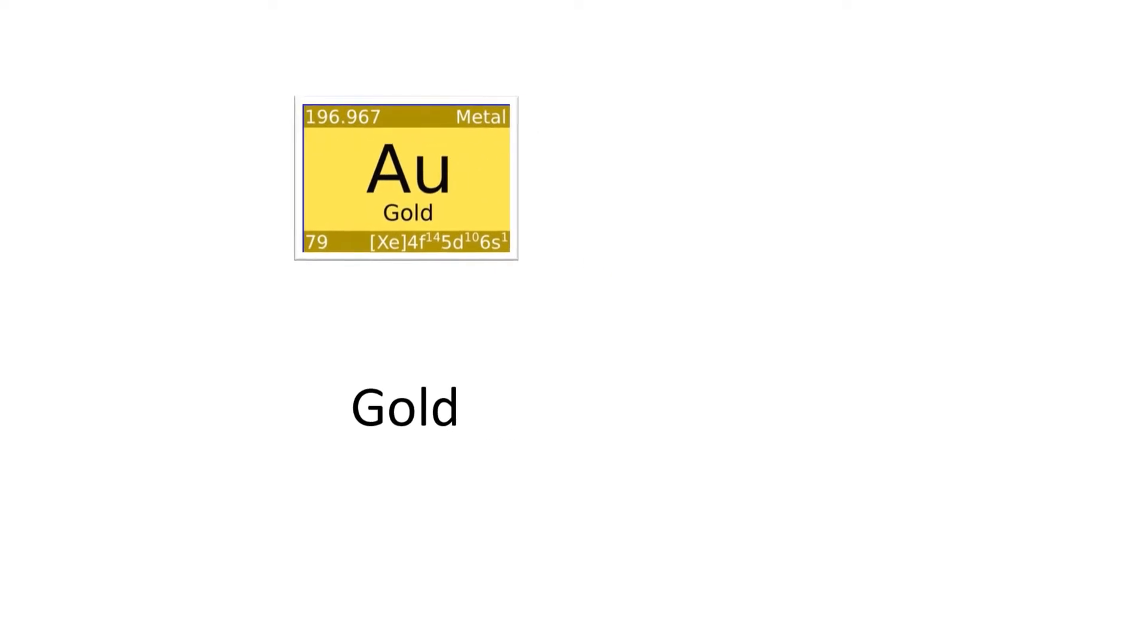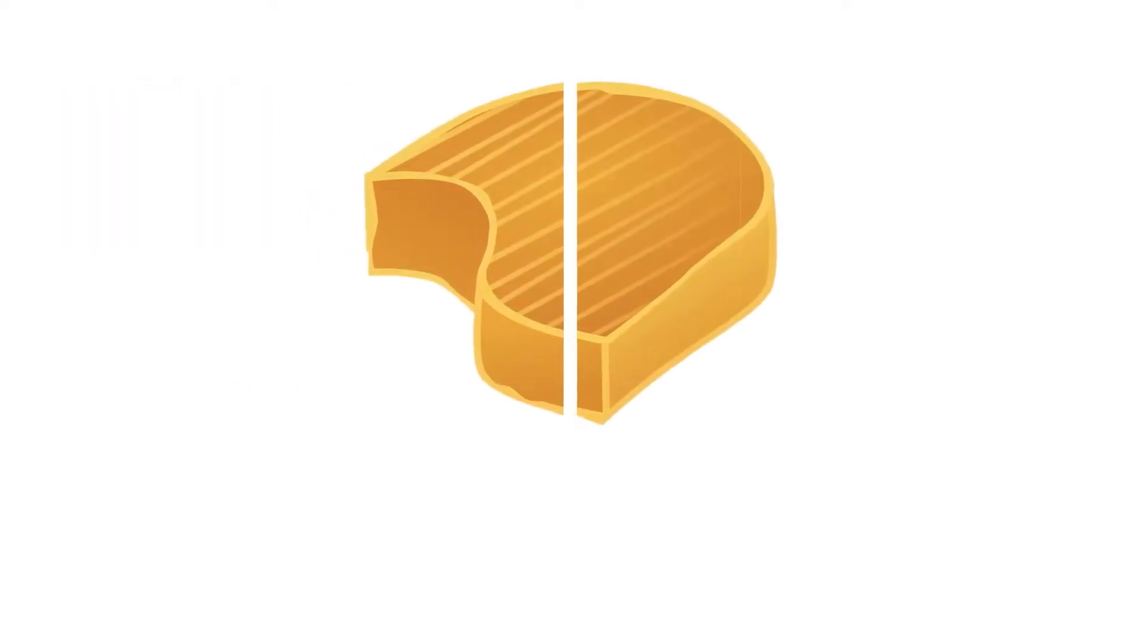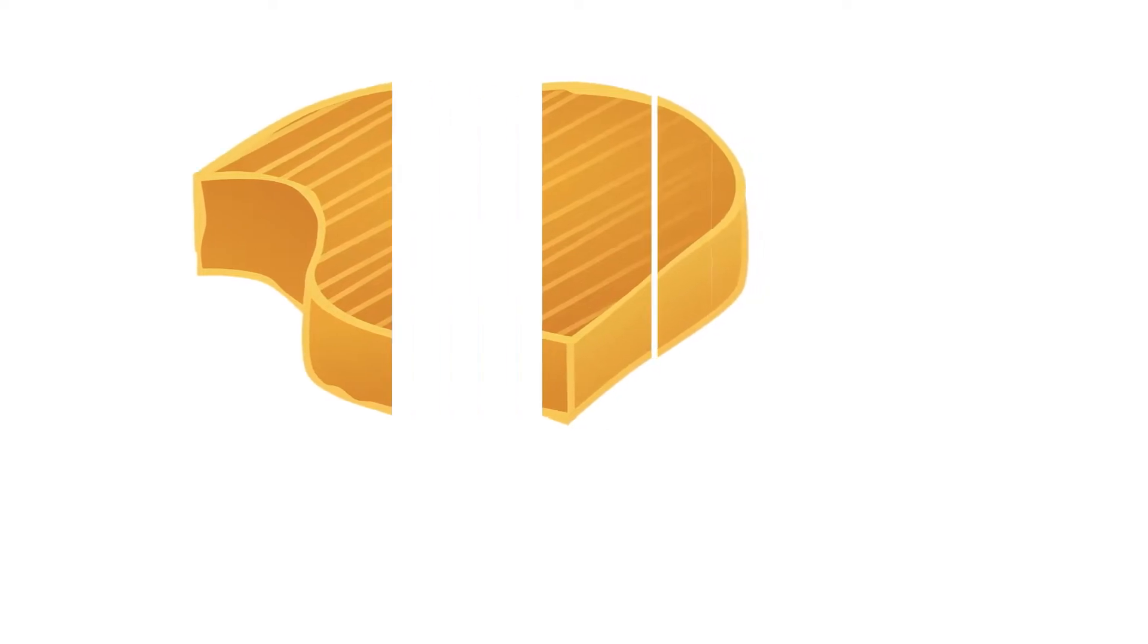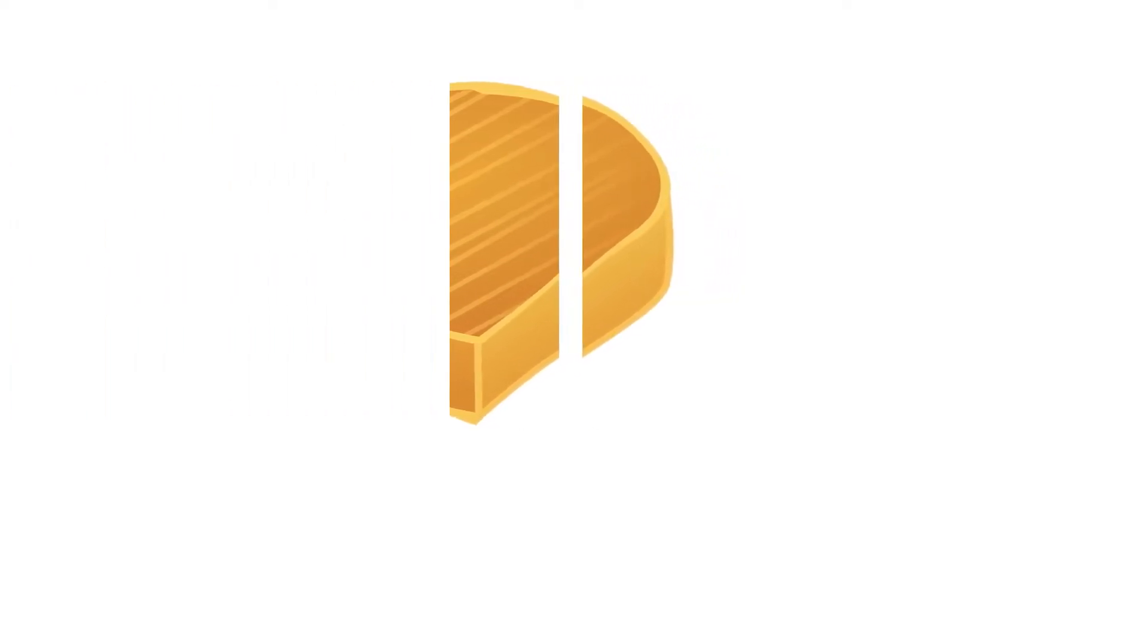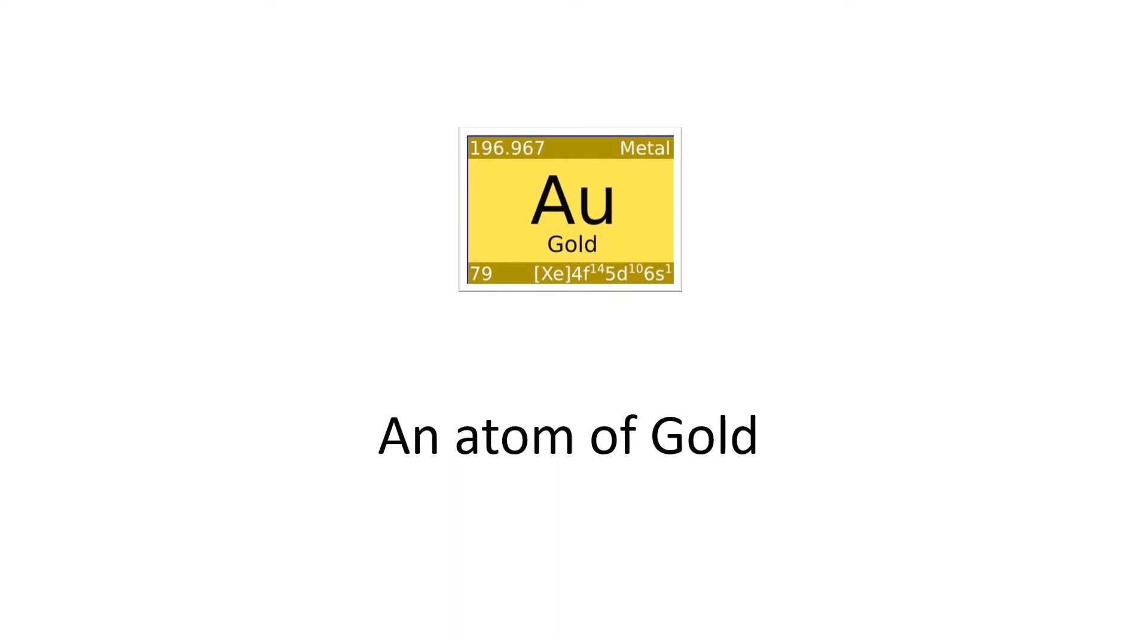For example, consider the element gold. Imagine cutting a gold nugget in half, then again one of the halves in half and repeating this process until a piece of gold remains that is so small it could not be cut in half. This minimally sized piece of gold is an atom. If you divide it any further, this atom would no longer be gold.